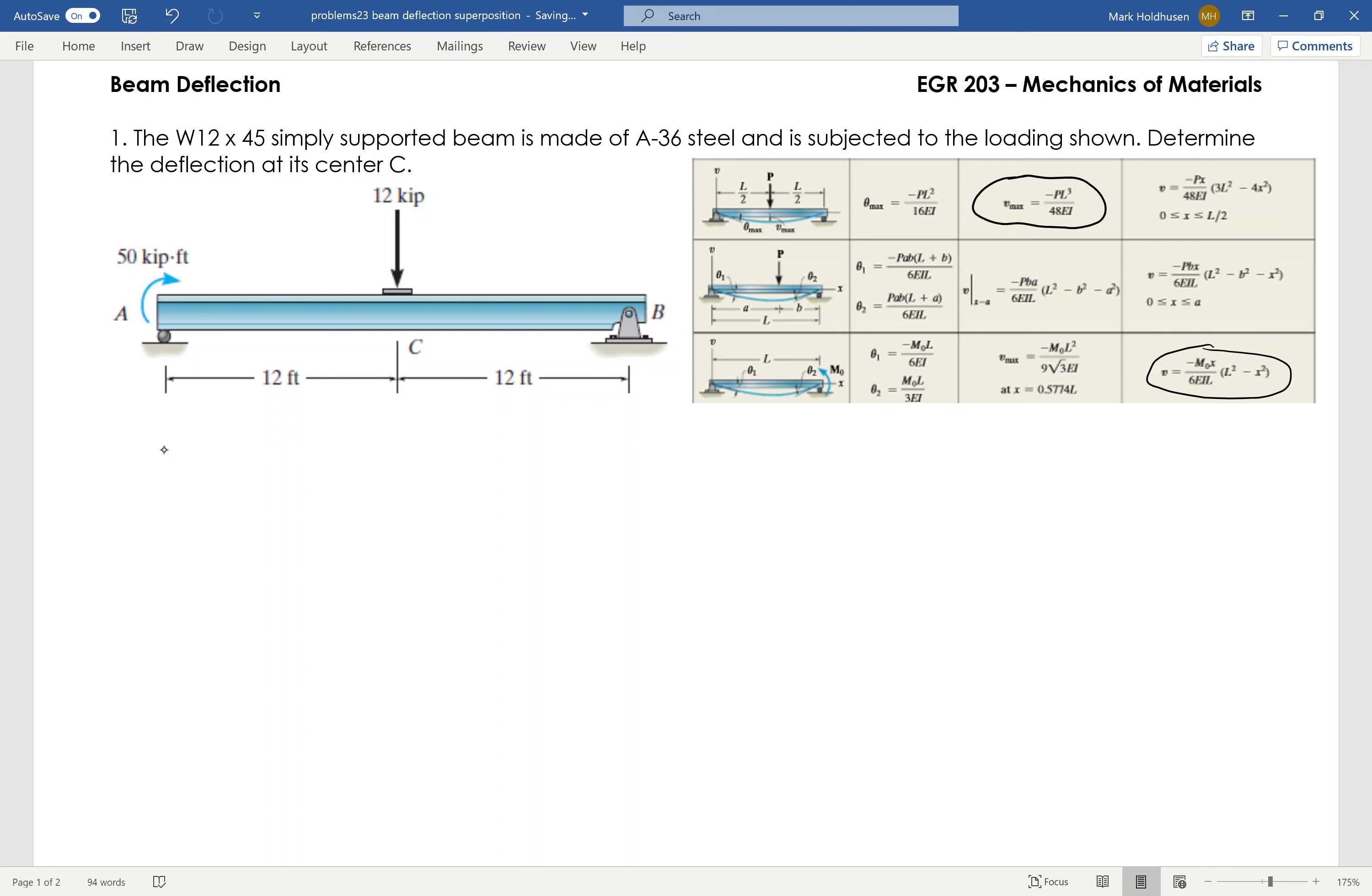So again, what I'm essentially doing here is I'm taking a simply supported beam and I'm breaking it up into two pieces. I'm going to break it up into that, and I'm going to add to it that. And I'm going to find the deflection of each and add them together.